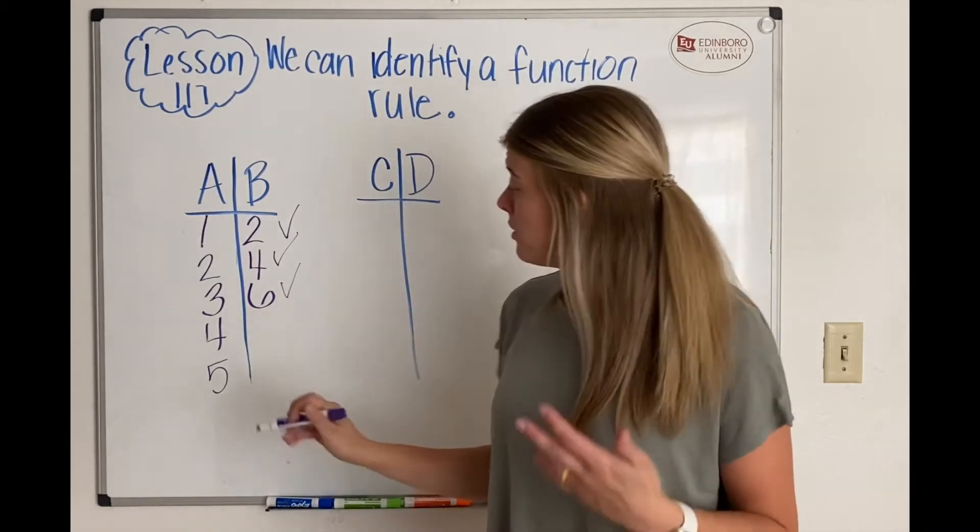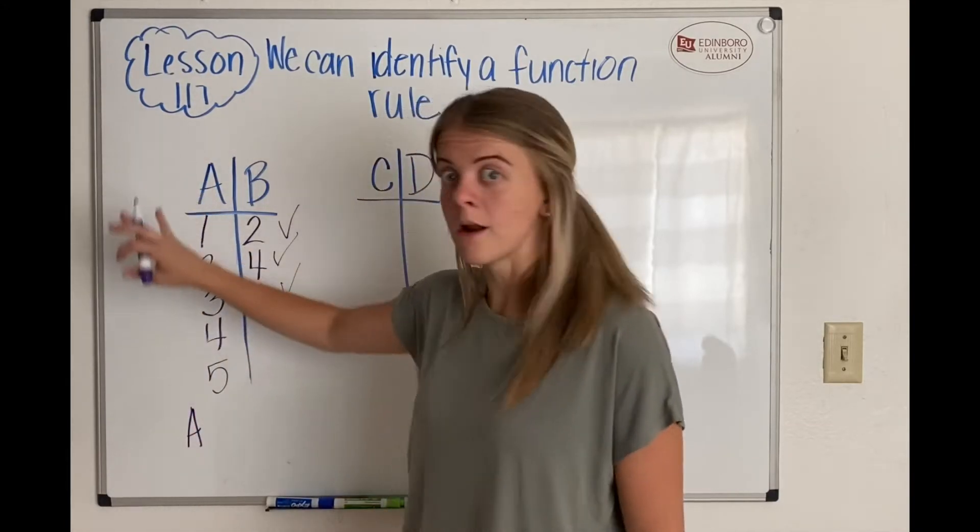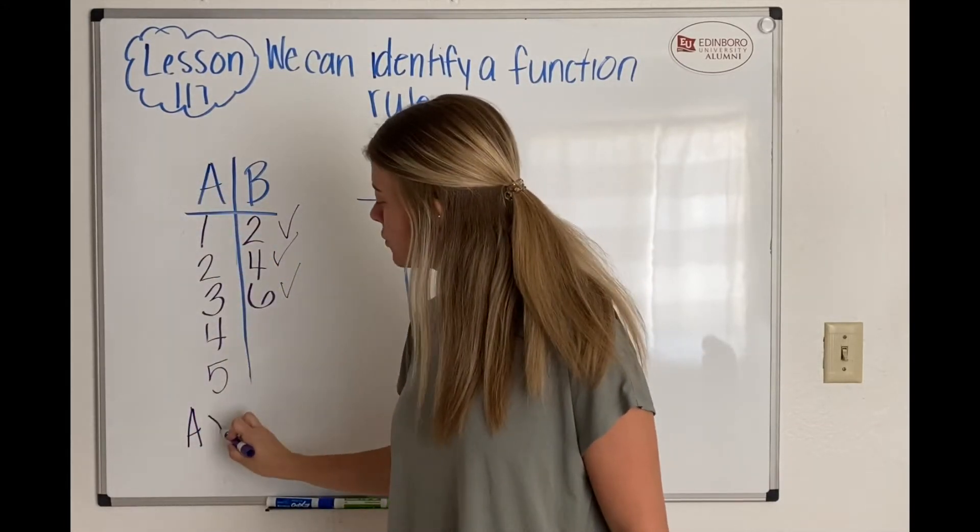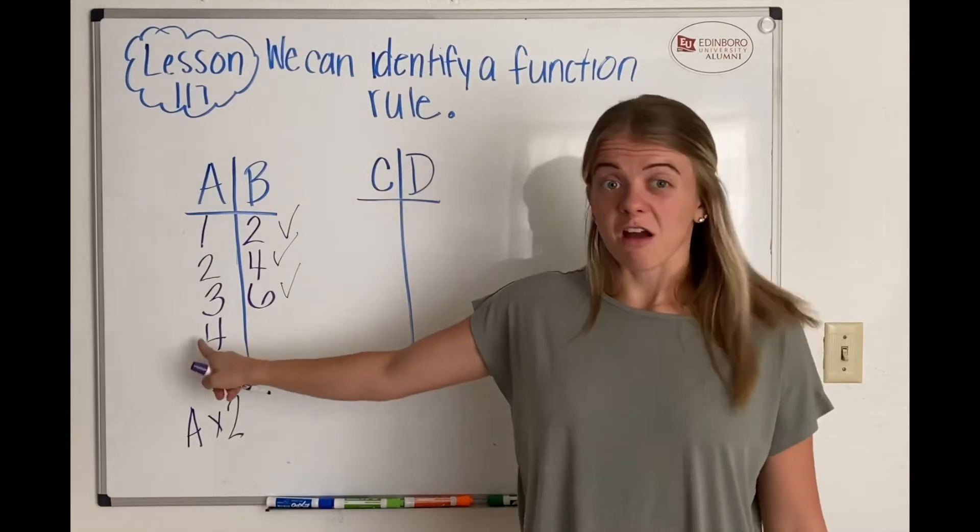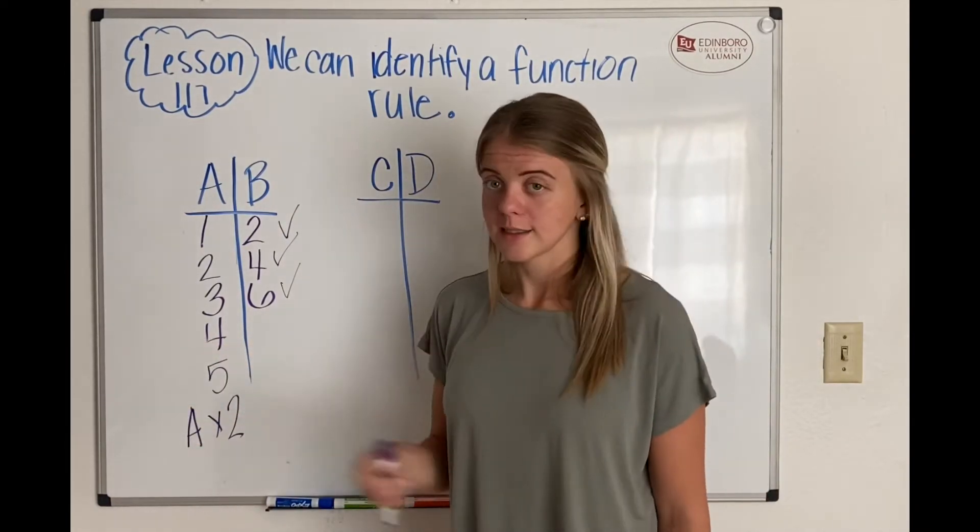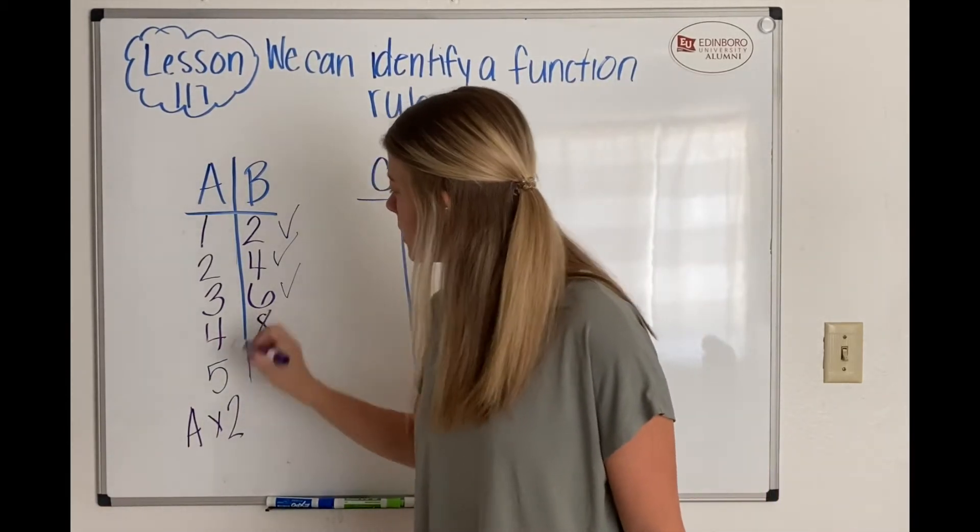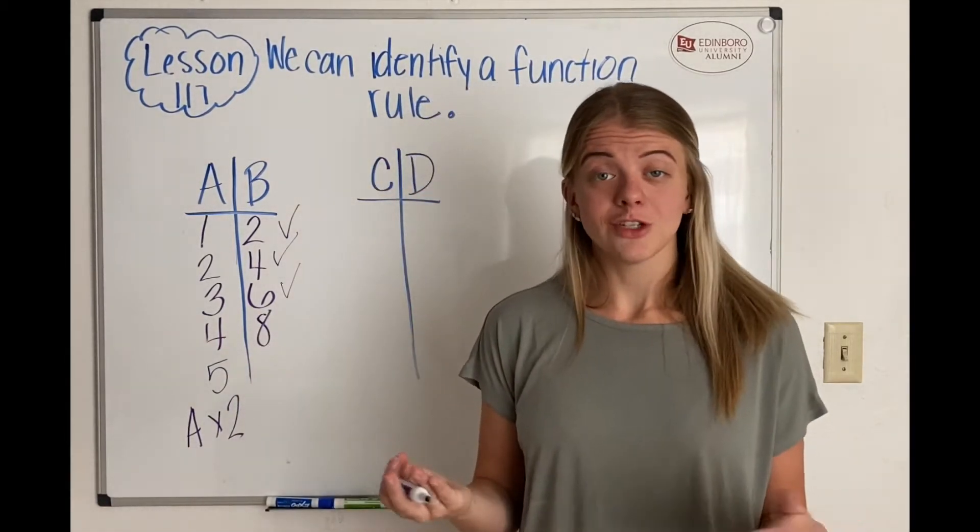So now that we know our function is A, whatever number is up here, times 2, we can figure out the rest of these by ourselves. So 4 times 2 is 8. 5 times 2 is 10.